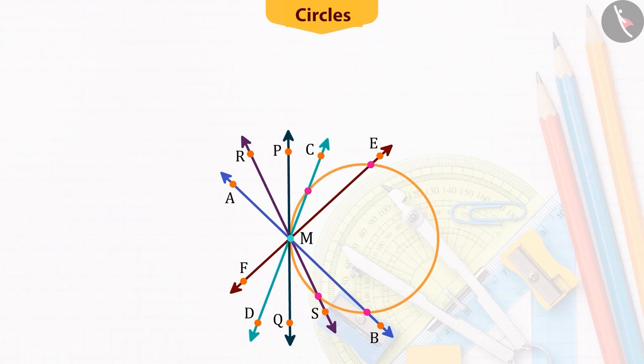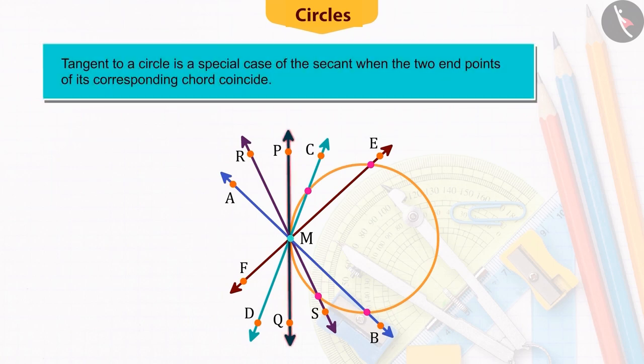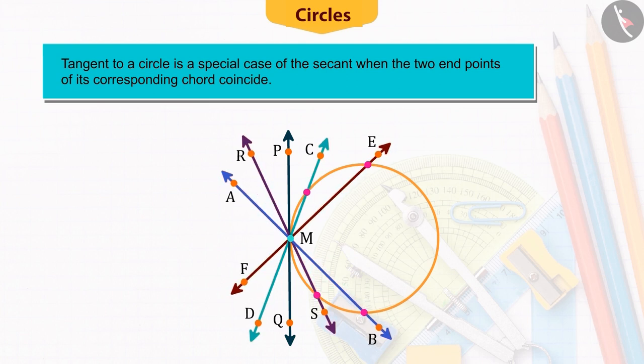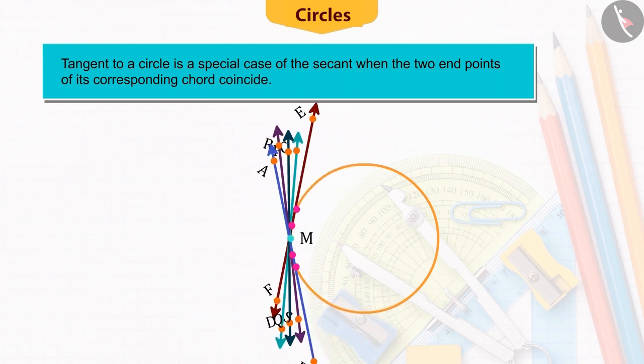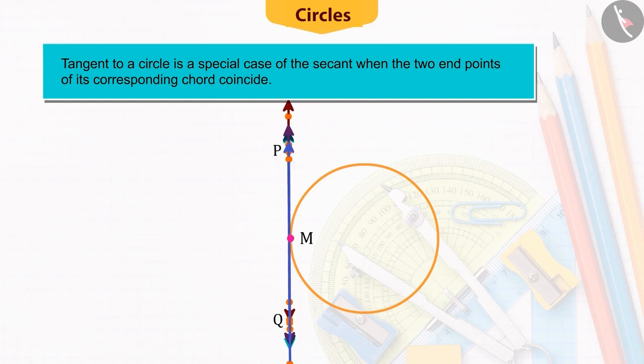In our previous video, we learned that the tangent to a circle is a special case of the secant where the two end points of its corresponding chord coincide. Let us look at this activity to understand this better.